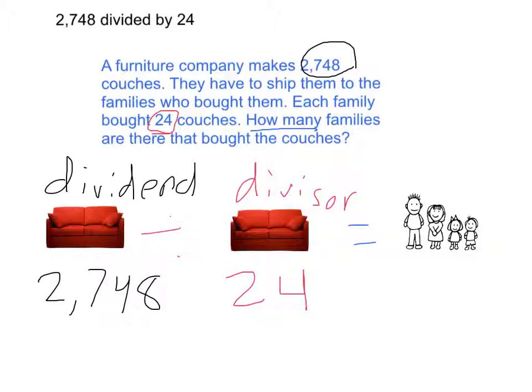That equals the quotient. Our quotient is also known as the answer, and our answer is answering our question here: How many families are there that bought the couches? We don't know until we divide 2,748 by 24 and get our quotient.